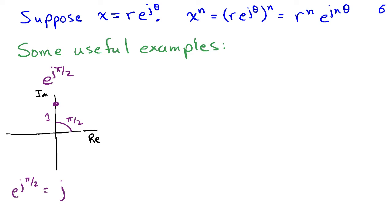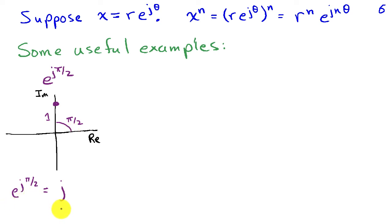Working in polar coordinates using Euler's formula leads to useful insight. For example, confronted with e to the j pi over 2: the magnitude is 1 and the phase is pi over 2. A point distance 1 from the origin at angle pi over 2 with respect to the positive real axis is simply j. You can confirm this using cosine pi over 2 plus j sine pi over 2, since cosine pi over 2 is 0 and sine pi over 2 is 1. I strongly encourage drawing complex numbers in the complex plane for greater insight.